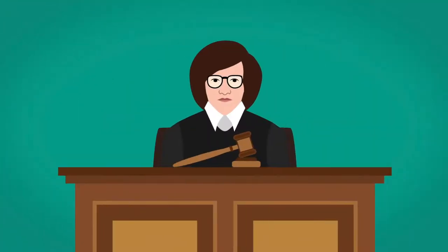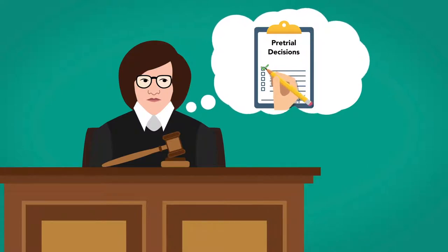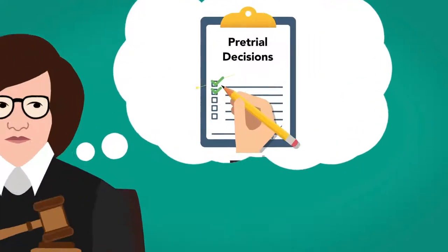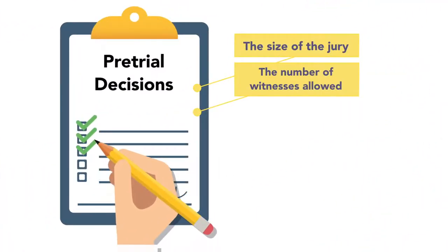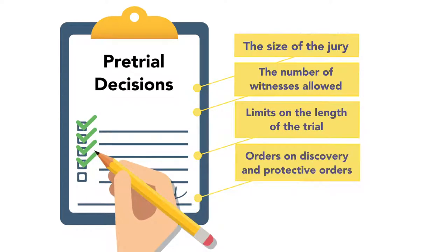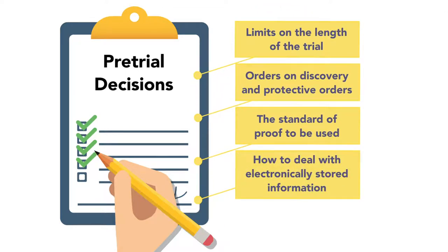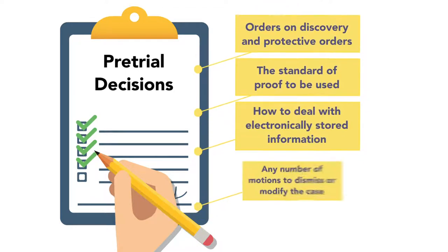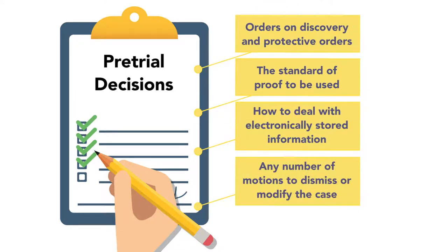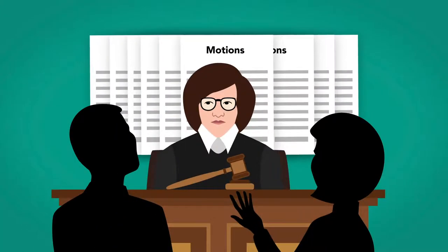Before the trial begins, the judge will often have to make several pretrial decisions. Among those may be the size of the jury, the number of witnesses to be allowed, limits on the length of the trial, orders on discovery and protective orders, the standard of proof to be used, how to deal with electronically stored information, and any number of motions to dismiss or modify the case. These can be decided through a series of motions and pretrial hearings.